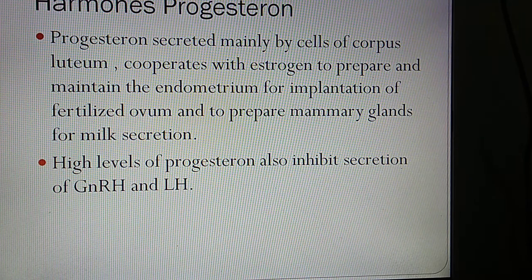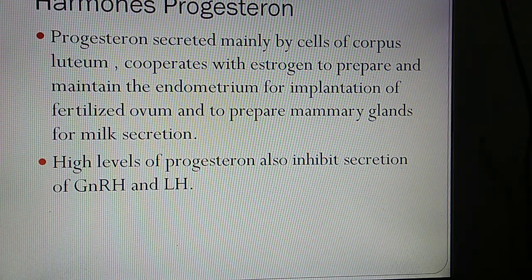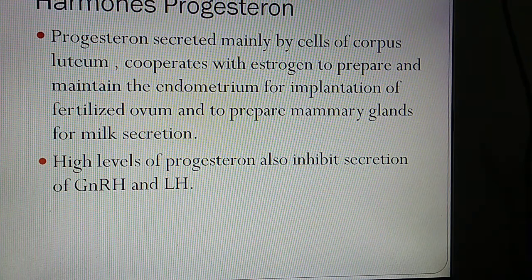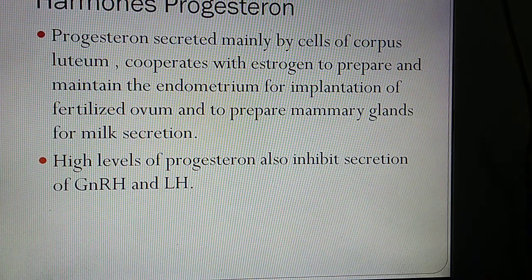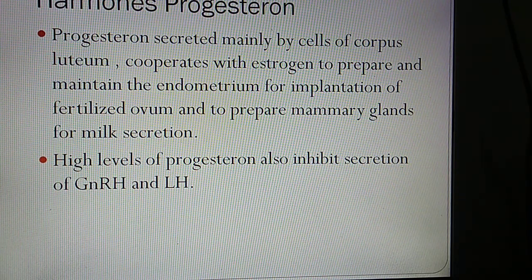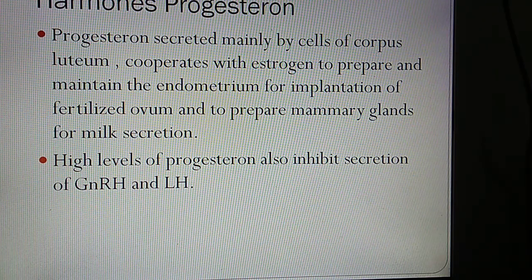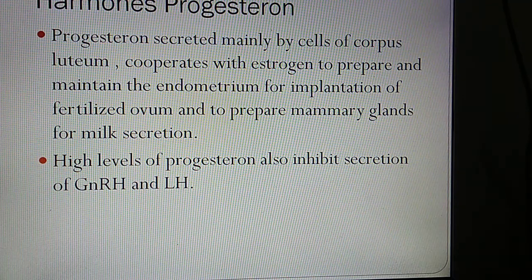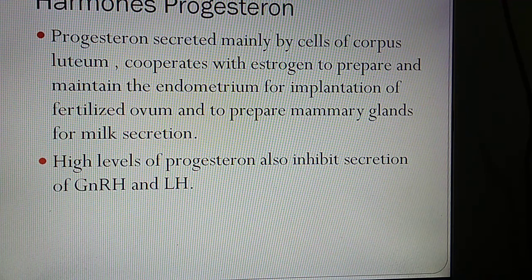Progesterone is secreted mainly by the cells of the corpus luteum; it cooperates with estrogen to prepare and maintain the endometrium for implantation of a fertilized ovum. It also prepares the mammary glands for milk secretion. High levels of progesterone inhibit secretion of GnRH from the hypothalamus and LH from the anterior pituitary; if progesterone levels fall, secretion of GnRH and LH increases again.